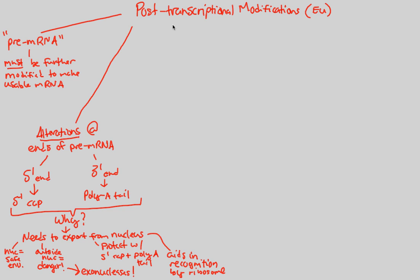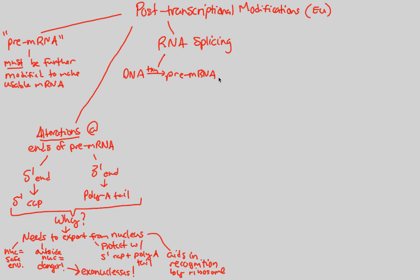Another post-transcriptional modification is RNA splicing. Besides protecting the pre-mRNA by adding the 5' cap and poly-A tail, we also have to do some splicing. Let's revisit the central dogma: DNA goes to RNA through transcription, but in eukaryotes it's technically pre-mRNA first, which then becomes mRNA. This pre-mRNA will contain two important components: things known as exons, and also things known as introns.